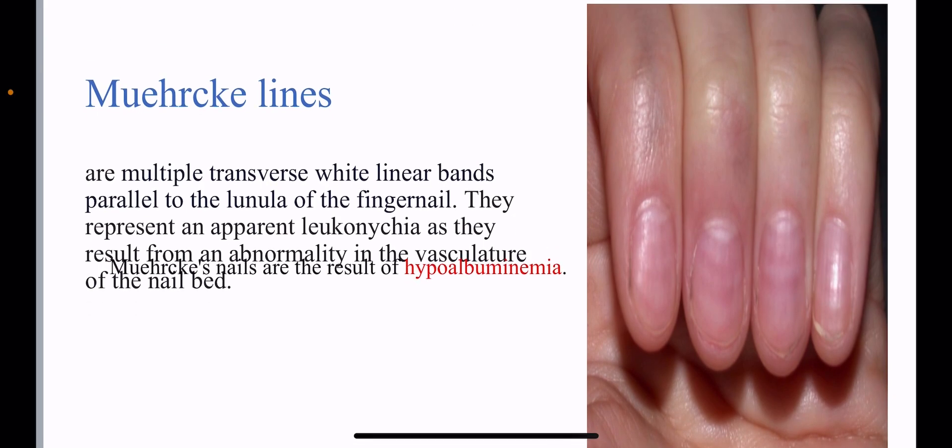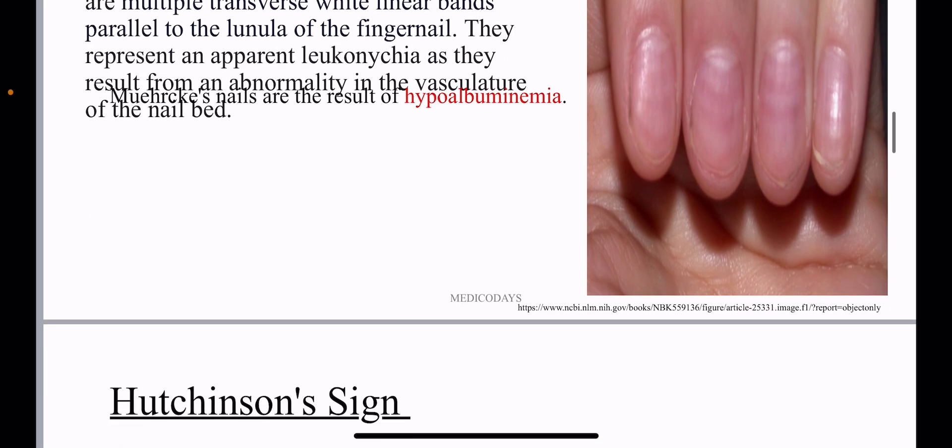Muehrcke's lines are multiple transverse wide linear bands parallel to the lunula of the fingernail. They represent an apparent leuconychia resulting from an abnormality in the vasculature of the nail bed, and they are seen in hypoalbuminemia.